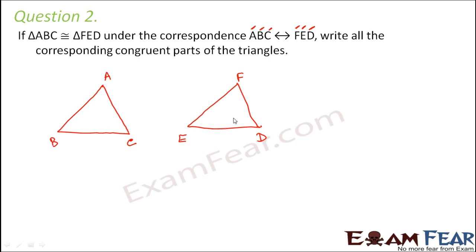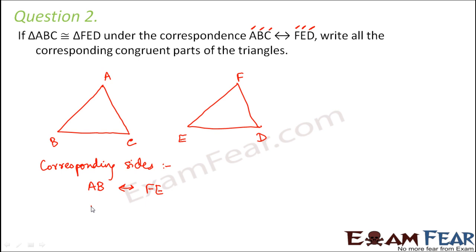Since these two triangles are congruent, all their corresponding parts are also congruent — their corresponding sides and angles are equal. Looking at the corresponding sides: AB corresponds to FE, AC corresponds to FD, and BC corresponds to ED.